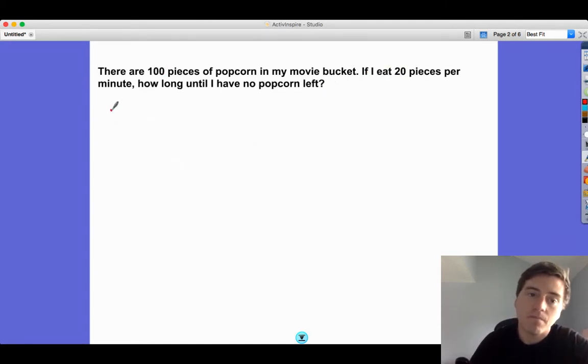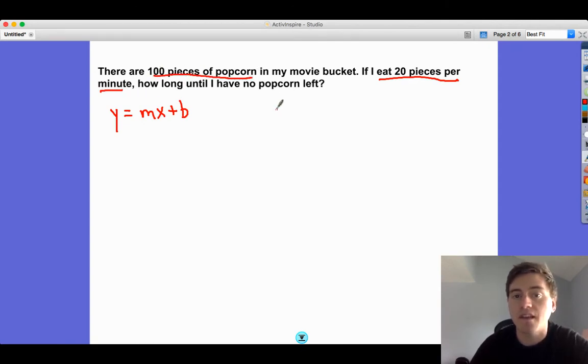We're starting with 100. Linear equations are written y equals mx plus b, where we have a starting value and add a certain amount each time. I eat 20 pieces per minute. I start with 100 and then I eat. We're subtracting. We lose 20 for every minute.